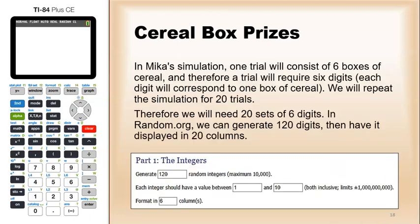In Micah's simulation, one trial will consist of six boxes of cereal. Therefore, a trial will require six digits, one for each box. Let's repeat this for 20 trials. So we'll need 20 sets of six digits. Altogether, we'll need to generate 120 digits, then have them displayed in 20 columns.